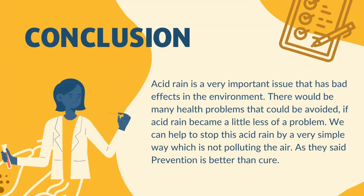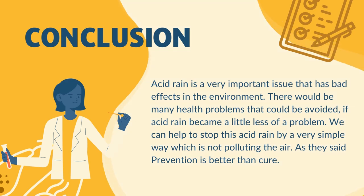Acid rain is a very important issue that has bad effects on the environment. There would be many health problems that could be avoided if acid rain became less of a problem. We can help to stop acid rain in a very simple way — by not polluting the air. As they say, prevention is better than cure.